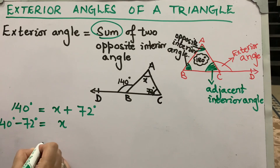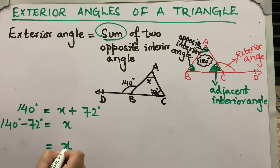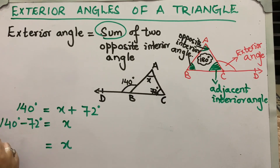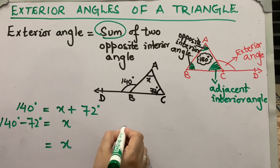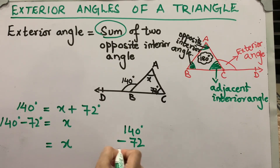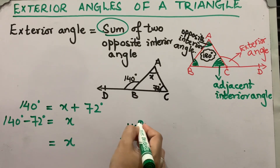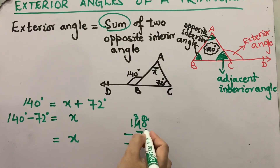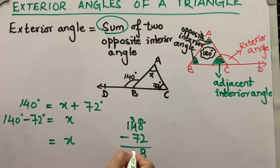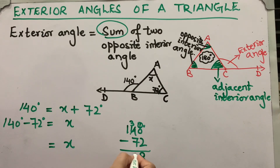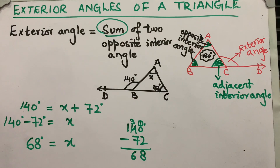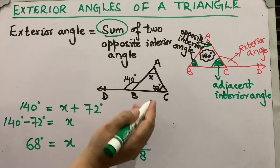This process is called transposition, in which the number is shifted to the other side of the equals sign. So x equals 140 degrees minus 72 degrees. Taking the carry: 10 minus 2 equals 8, 13 minus 7 equals 6. So x equals 68 degrees.